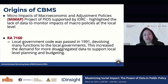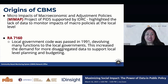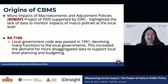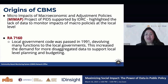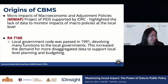What came out of the initial assessment was that there was a lack of data to monitor impacts of macro policies at the local level. This was one of the major findings at the early stages of MIMAP. Also, at around that time, RA-7160, or the Local Government Code, was passed in 1991, devolving many functions to the local governments. This increased the demand for more disaggregated data to support local-level planning and budgeting.